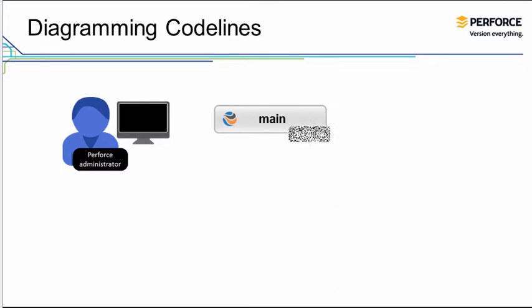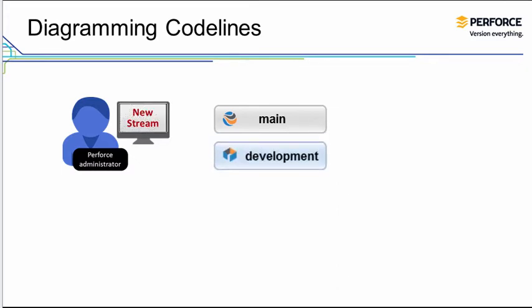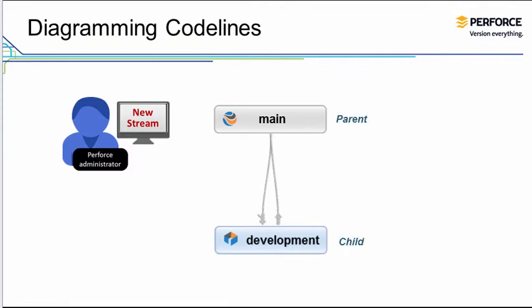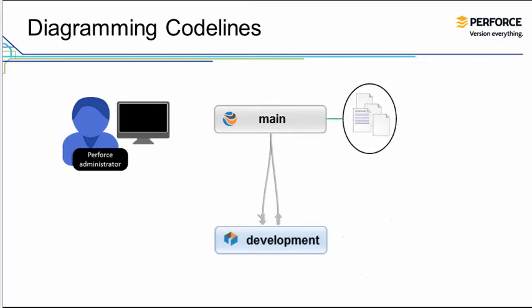When you create a new stream that is a child of an existing stream, the child stream, by default, automatically inherits some of the properties of the parent stream, which includes the definition of the scope of files contained in the stream.